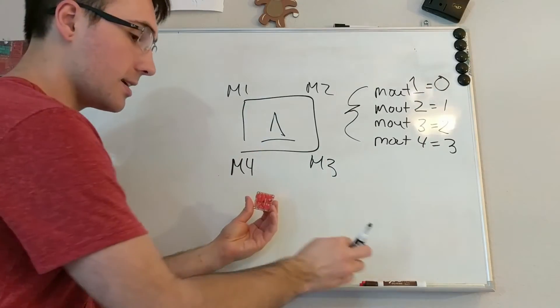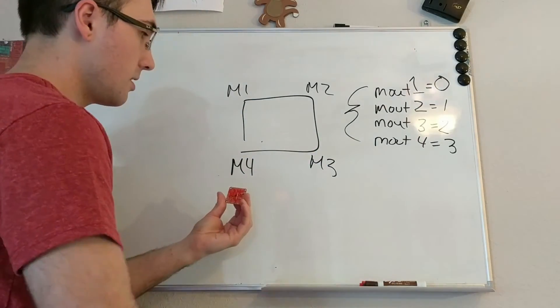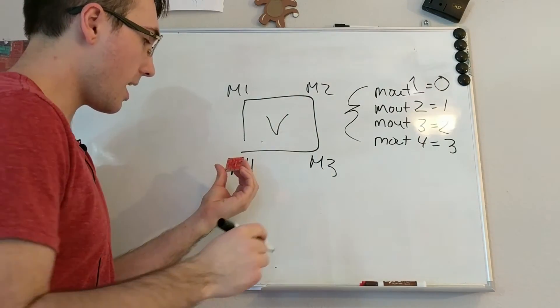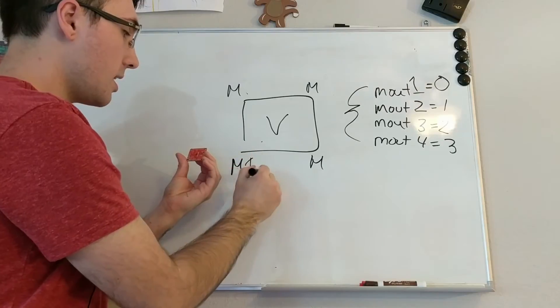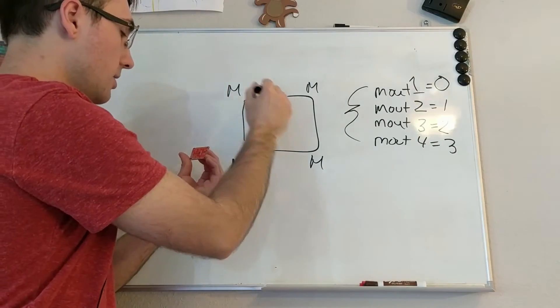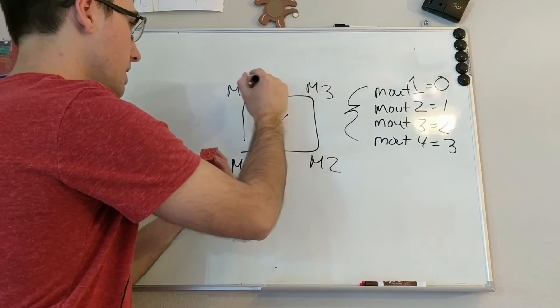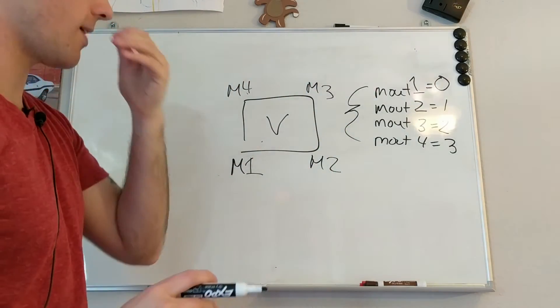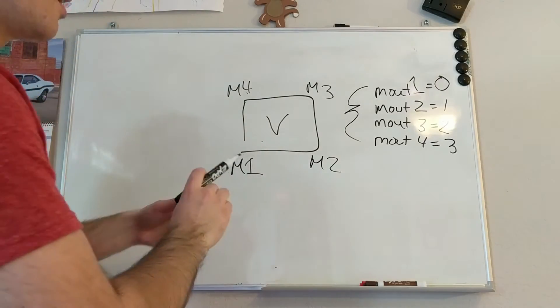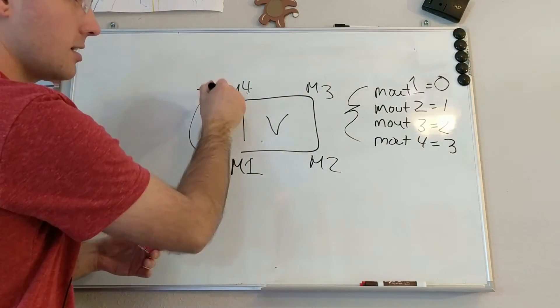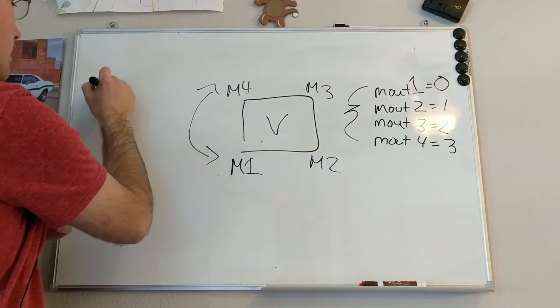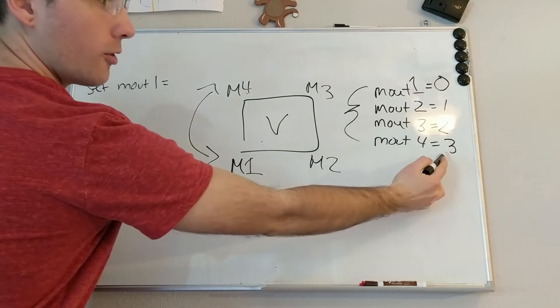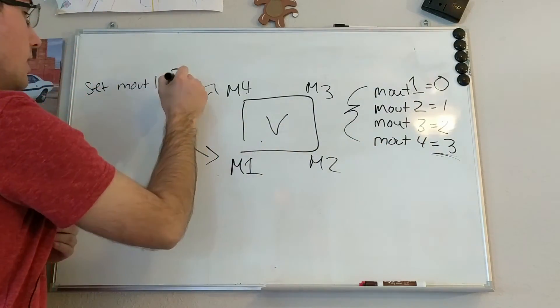So now what would happen is the arrow would be facing down and m1 would be here, m2 would be here, m3 would be here, and m4 would be here. We're going to want to swap these for the correct values. So mout 1 swapped with number 4, right? So that would be set mout 1 equals 3.